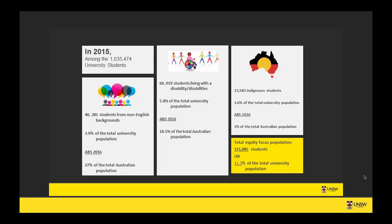Students living with disabilities included 60,019 students, which is 17.25% of the total population. The ABS in 2016 found that about 18.5% of the Australian population were living with a disability at any given time, so those figures are pretty representative of wider trends in Australia, which is promising. Finally, 15,585 Indigenous students were enrolled in 2015, which is 1.6% of the total university population. Indigenous peoples represent about 3% of the total Australian population.